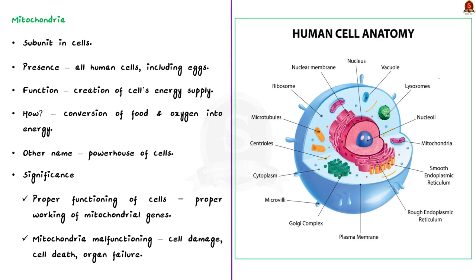To prevent the transmission of mitochondrial disease to the child, donated mitochondria is used. Mitochondria are a subunit in our cells, present in almost all human cells including eggs. They create most of a cell's energy supply, converting food and oxygen into energy — that is why they are called the powerhouse of the cell. For any cell to function, the mitochondrial genes need to work properly. When mitochondria malfunction, cells become damaged and can even die, leading to organ failure. Generally, mitochondrial diseases are caused by genetic mutations and are heritable — they can be passed from parent to child. To avoid this, mitochondrial donation treatment is preferred.